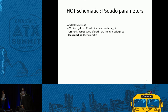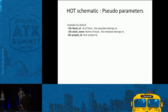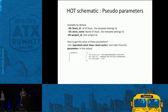Heat provides pseudo parameters. If you specify OS::stack_ID anywhere in a template, you get the stack ID. Similarly, you can get the stack name or the project ID. Once a stack is created, you can run the openstack stack show command to see the values of these pseudo parameters.